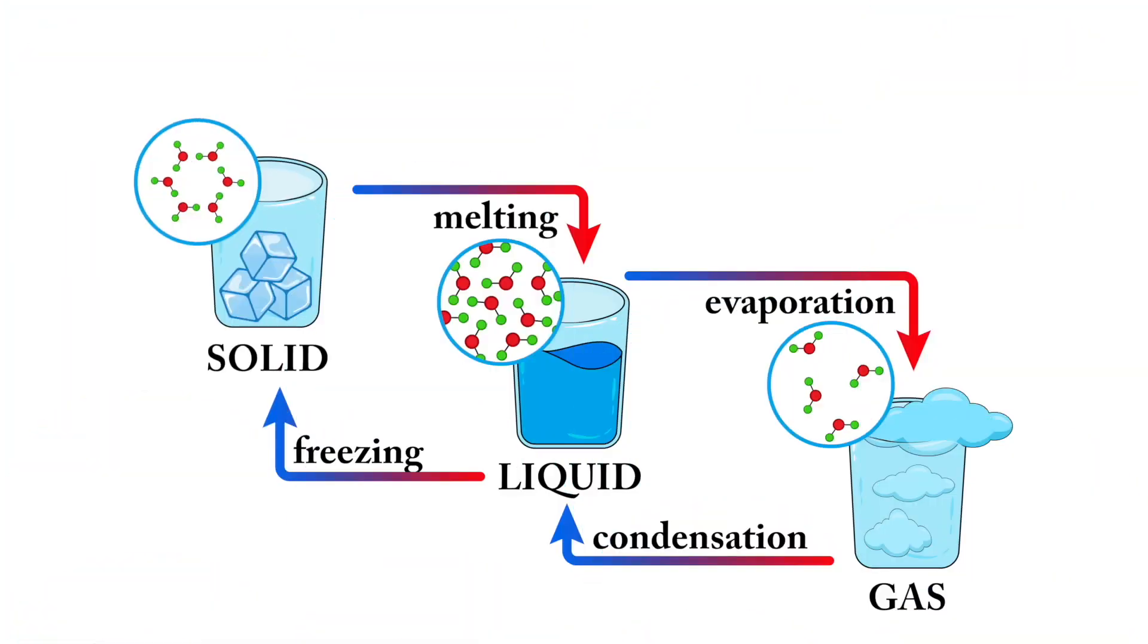Why don't we continue to focus on water as our main example as we discuss phase changes. Let's start with water in the gaseous state, otherwise called water vapor. Since water vapor is a gas, its particles are moving extremely fast. What do you think happens as you cool water vapor?